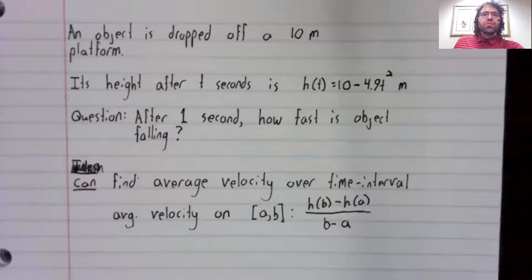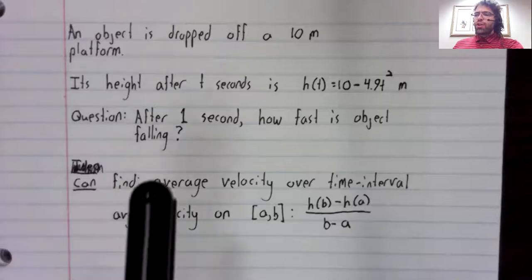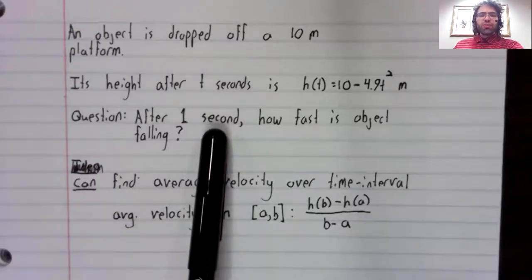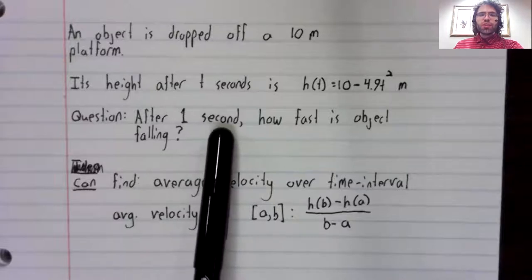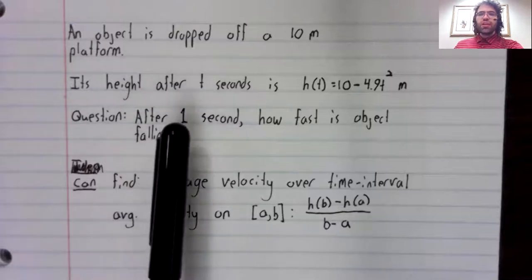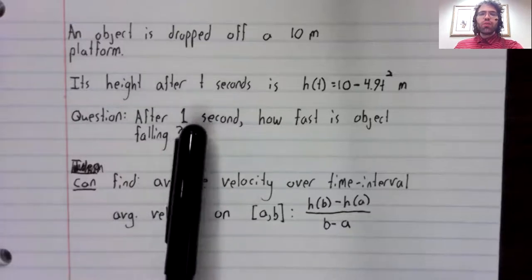From this, we have the following brain wave. We could approximate the exact velocity at one second by looking at average velocities on small intervals, including one.